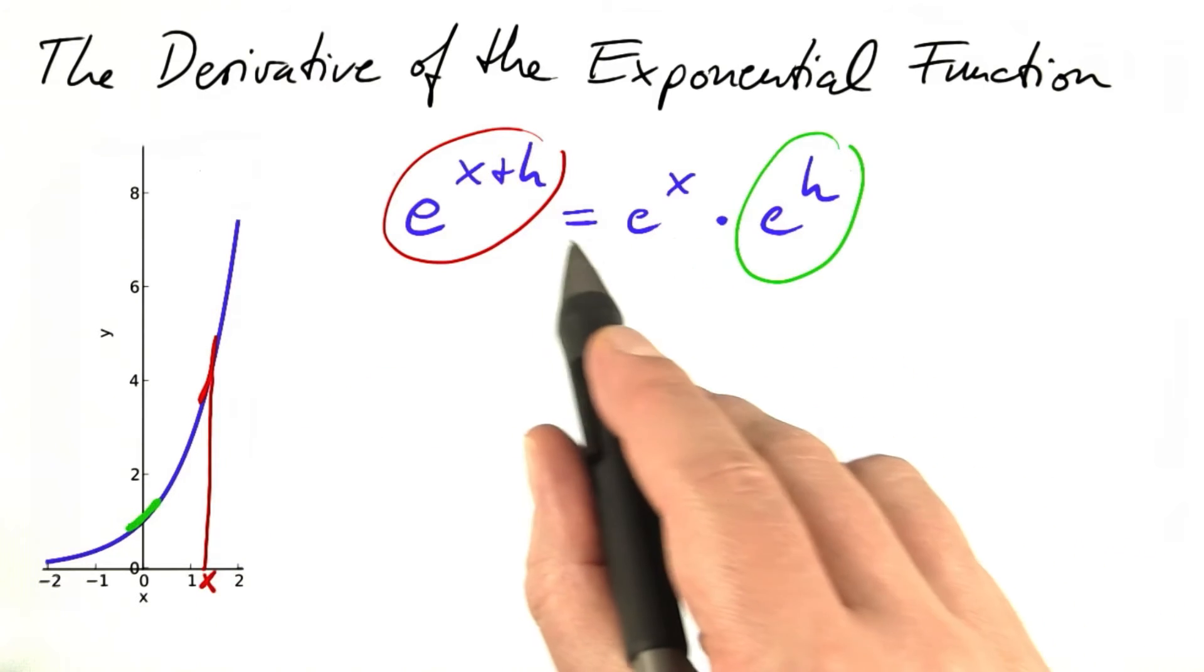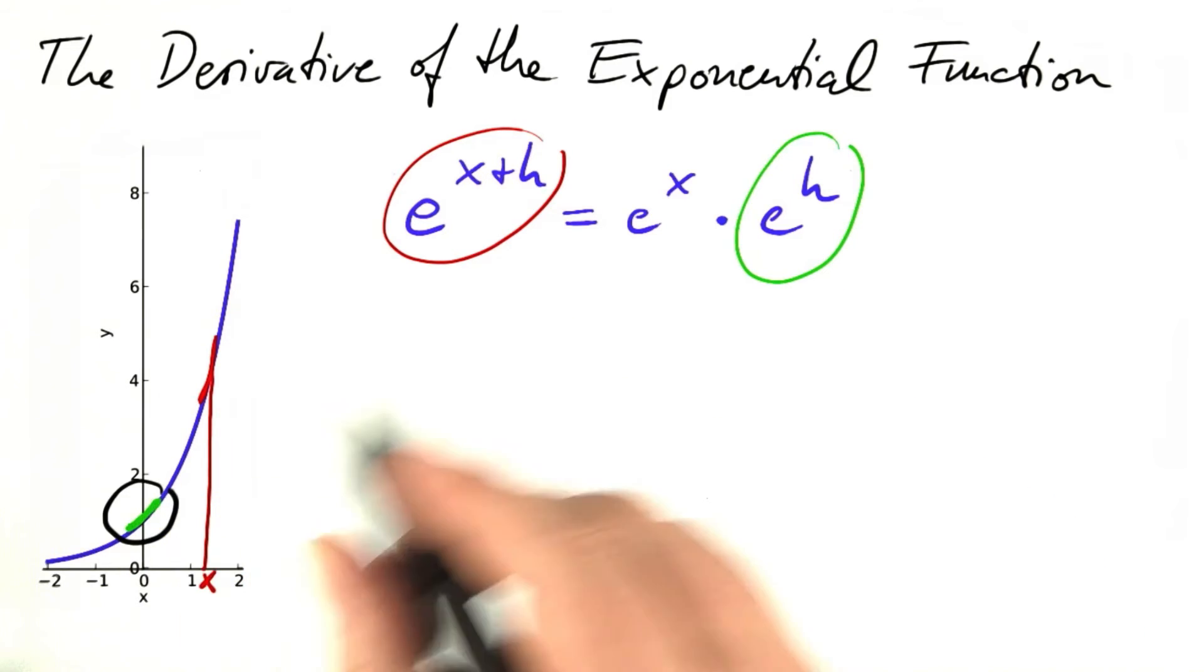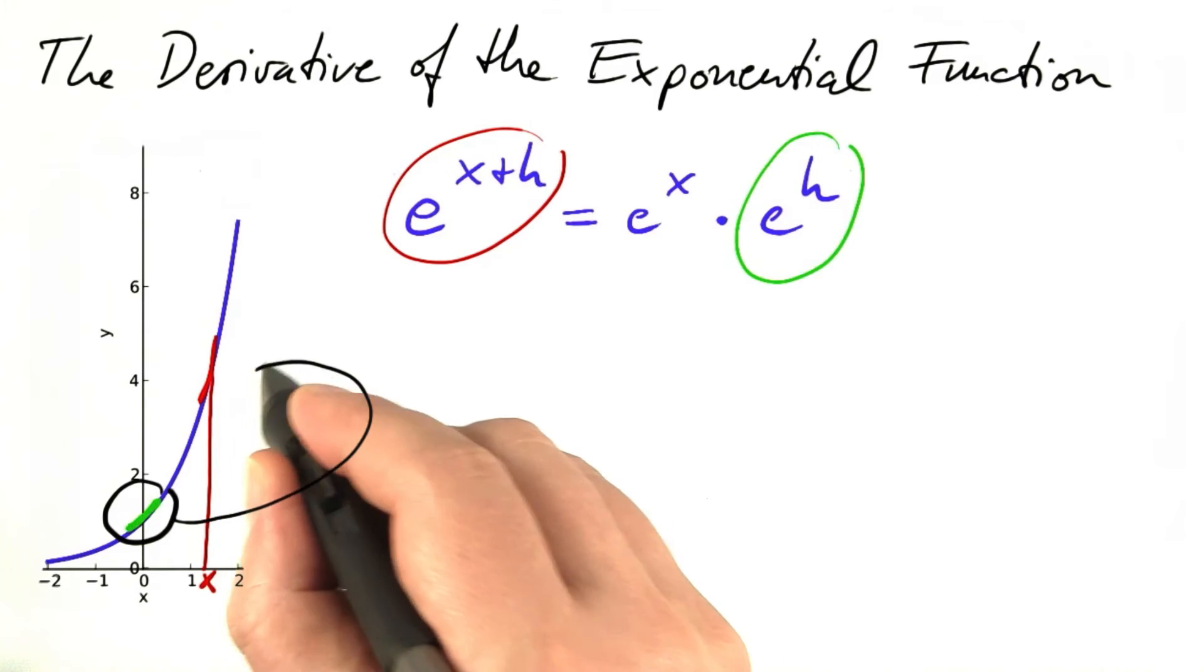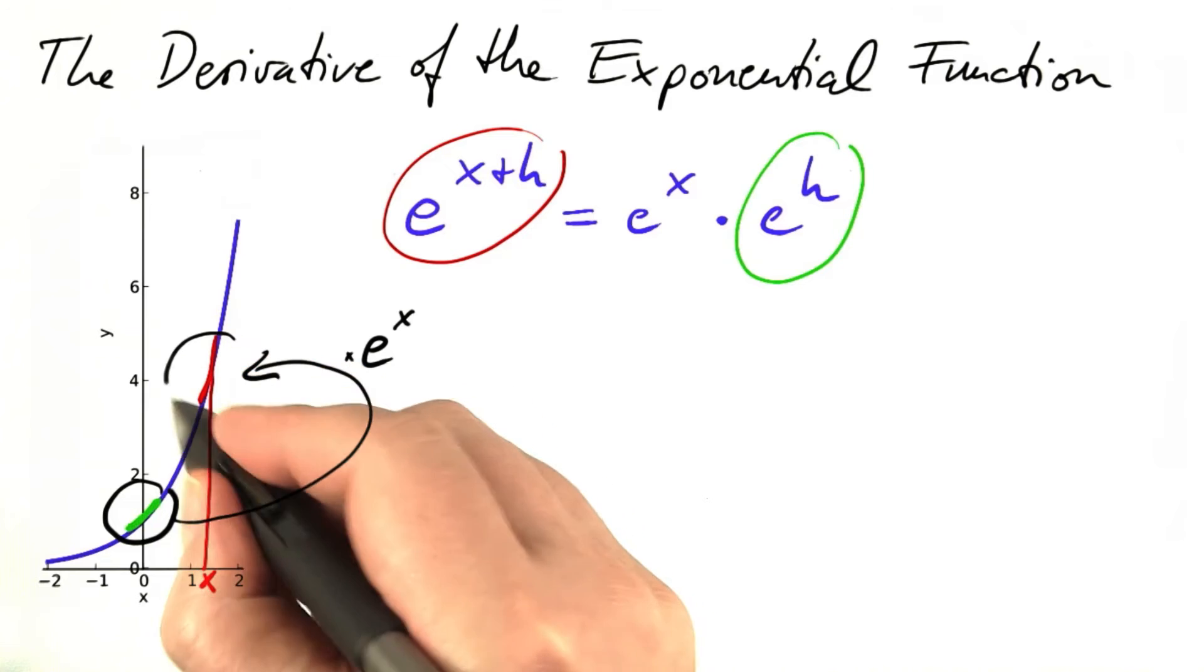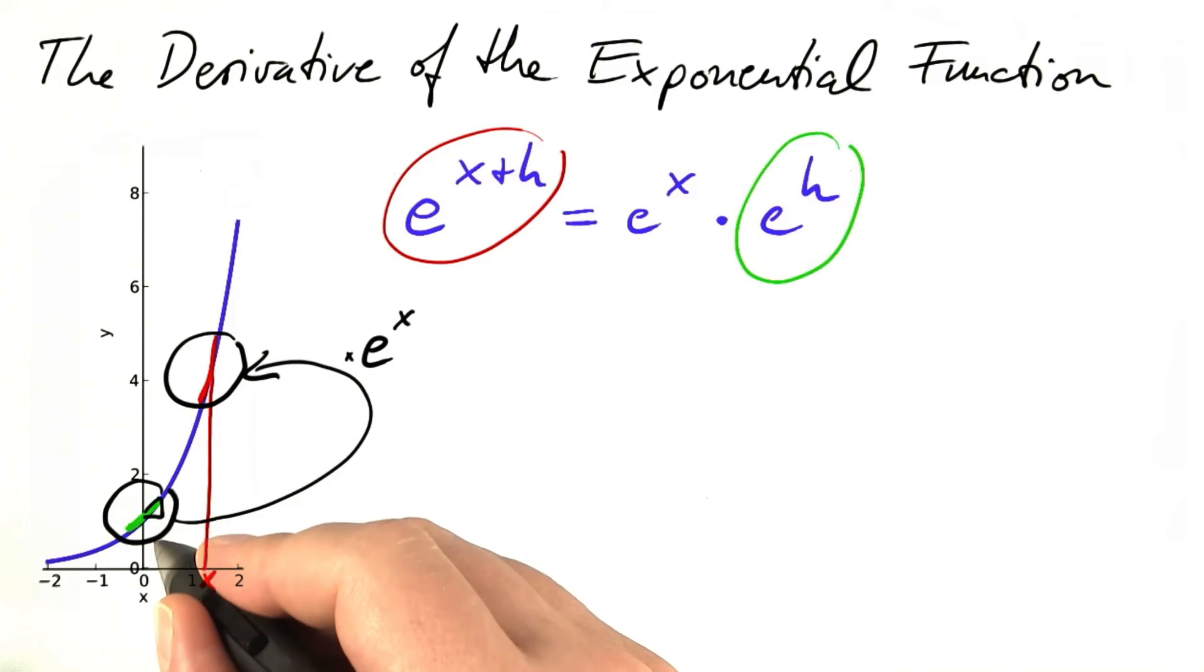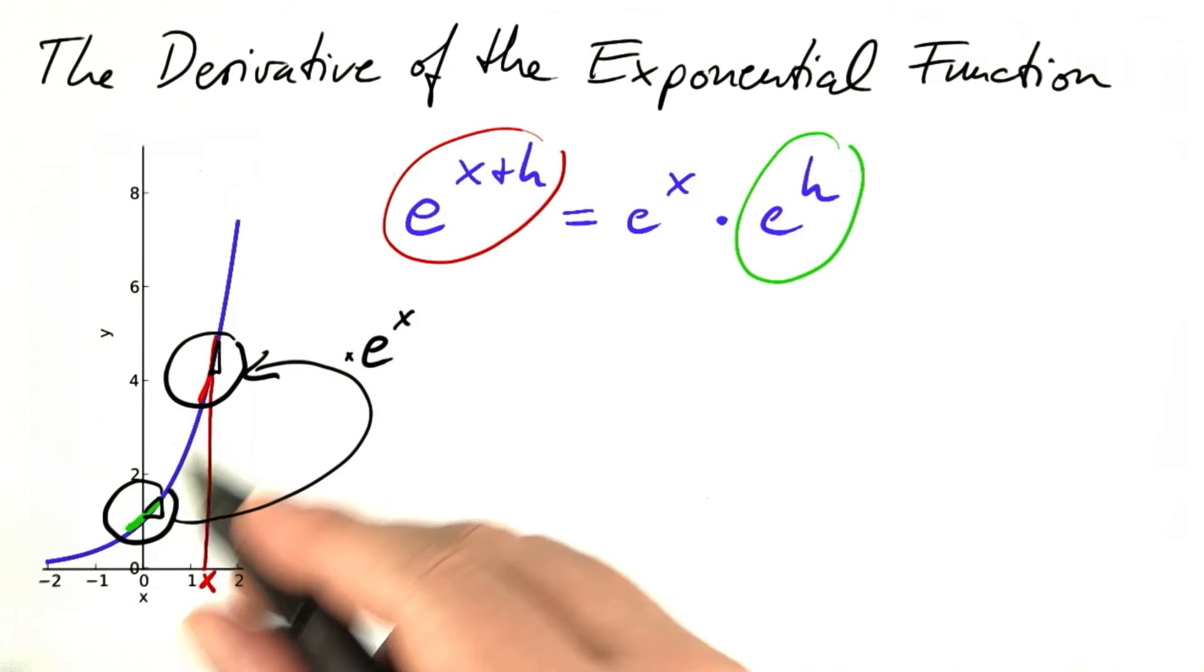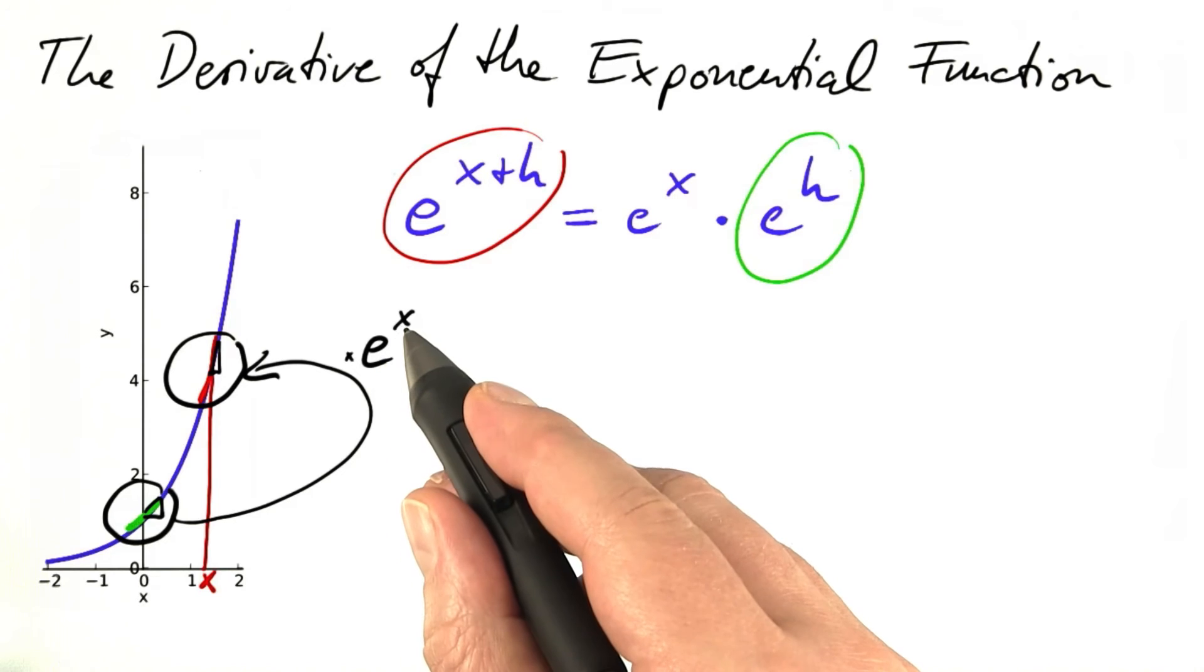Now this equation tells us that we can use the green part of that graph, magnify it by e to the power of x, and get the red part of that graph. Of course, the same thing would happen to the slope triangle here, which means the slope increases by a factor of e to the power of x.